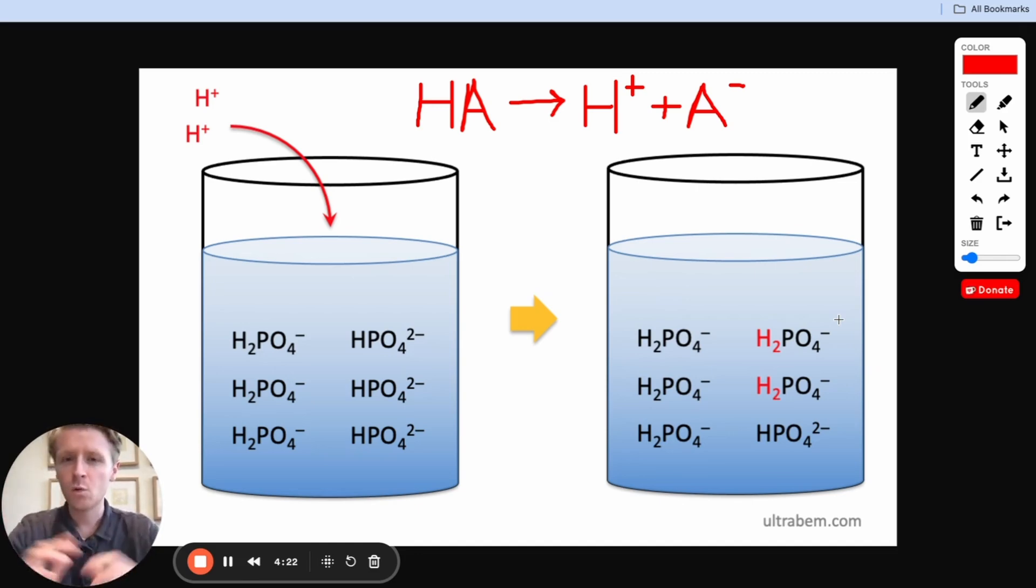Let me explain what I mean by that. We know that acids tend to be proton donors. Acids like to give up protons, so a lot of the times you'll see a generic acid represented like this, HA, where H is the proton or that H+ ion that's attached and A is the rest of the acid.